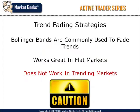Most traders use the Bollinger Band to trade trend fading strategies. These are reversal strategies that occur when the market tops out or bottoms out temporarily. The idea is to sell when the price reaches above the upper band and to purchase when the market gets below the lower Bollinger Band. The Bollinger Band works very well for fading trends when the market is range bound and choppy or flat.